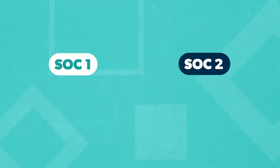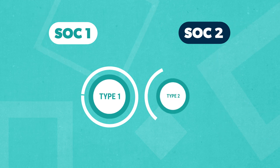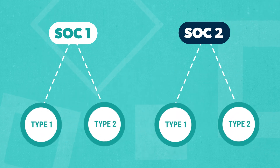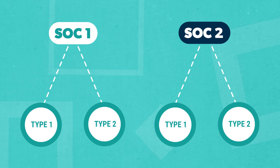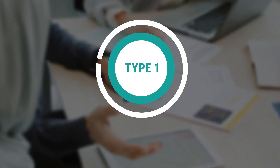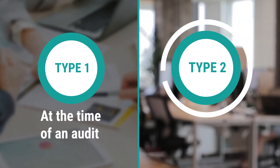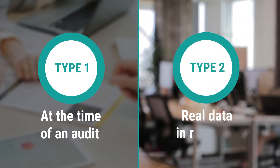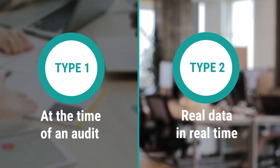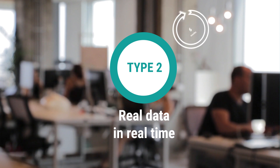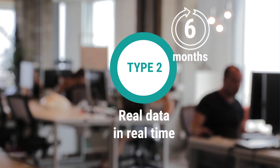Now that you know the differences between SOC 1 and SOC 2, it's time to discuss Type 1 and Type 2 reports. There are two types of sub-reports within SOC 1 and SOC 2, with some key differences between them. The Type 1 report evaluates a company's controls at the time of an audit. Type 2 takes this one step further, testing out the controls with real data in real time, measuring how well these controls work in practice by monitoring a company's operations over a six-month period.